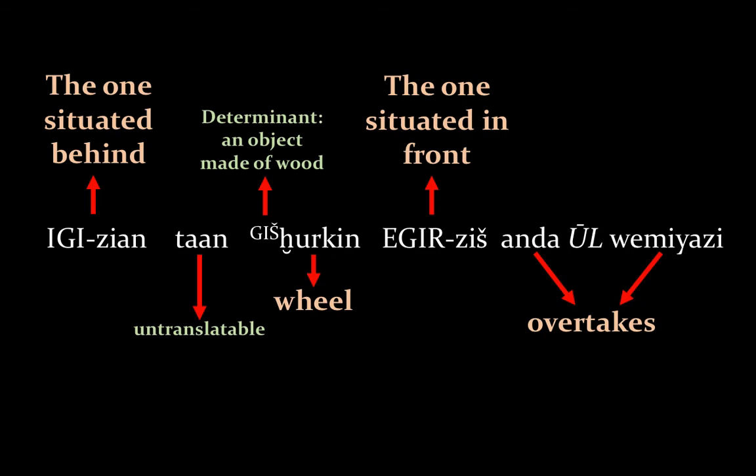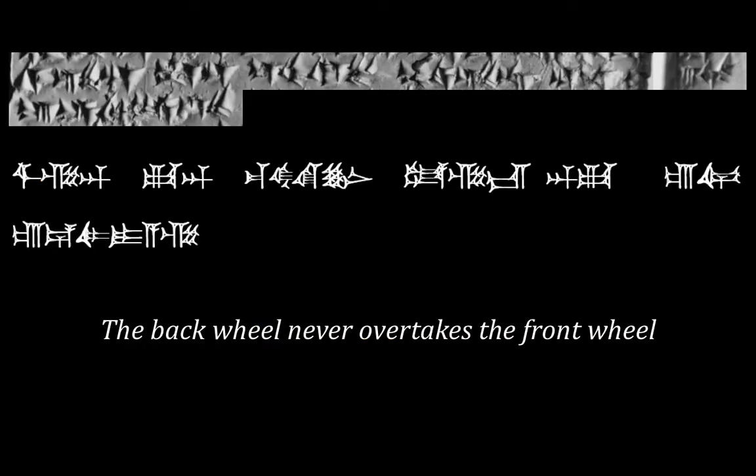And 'ul', as we have seen, is an Akkadian word which means 'not'. So taken all together, the sentence we have seen on this ancient Hittite tablet means: 'the back wheel never overtakes the front wheel.' It's a saying, an expression, which means that some things always happen in one way, no matter what we do. Or, if you want, that losers will always be losers — it's their destiny.